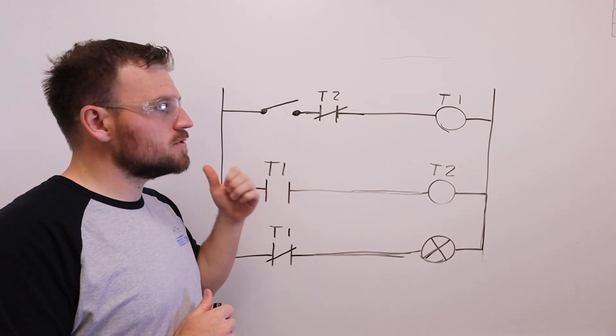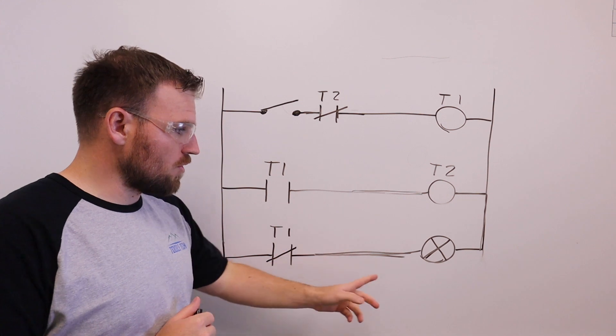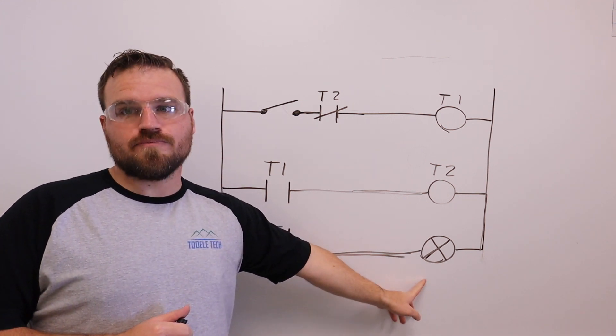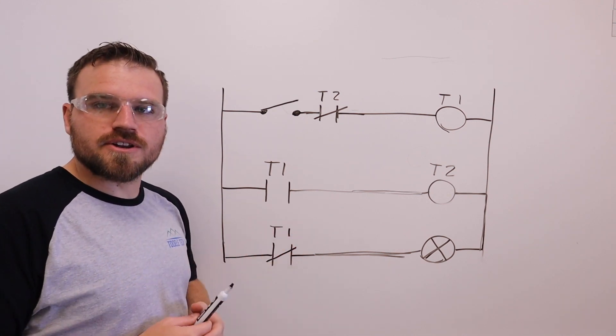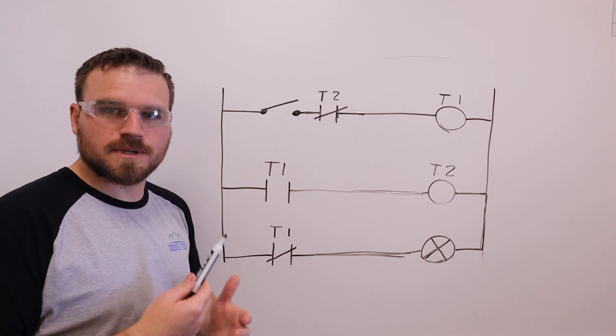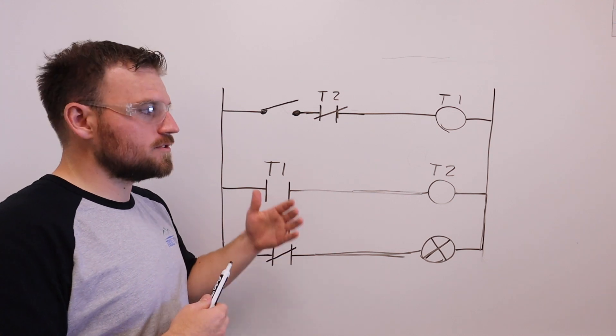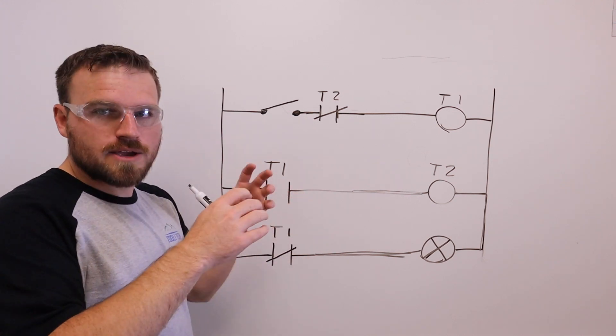All we're going to do is use two timers that are going to control a red light. So I'm going to quickly walk you through the circuit. A lot of this should be stuff you guys already know about. You should already know how to hook up a timer at this point. We're just going to use two timers to play with some stuff.